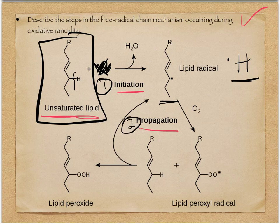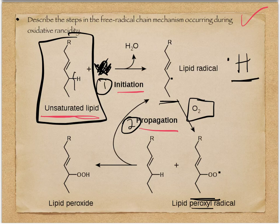Step two is our propagation step, and you probably need to know both propagation steps. This radical reacts and attaches to an oxygen — this is the oxidative part. It gains oxygen, and notice what we have: we have a peroxyl radical, sometimes called a hydroperoxide. Think of it as an oxygen group attached to where that radical was. These oxygens have a radical on them. That's step one of the propagation.